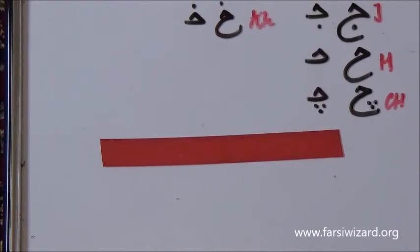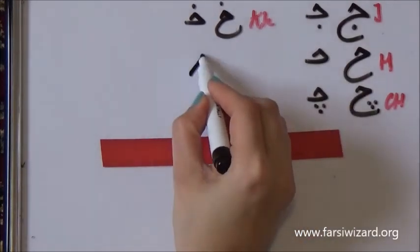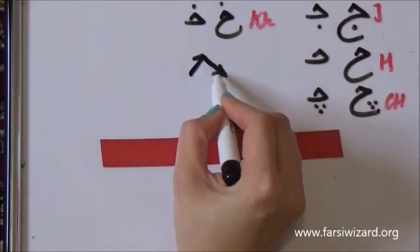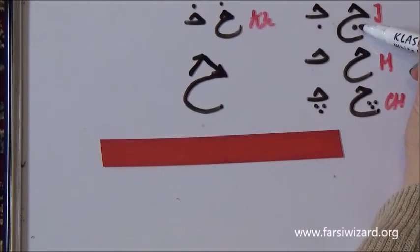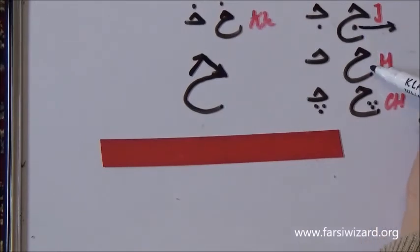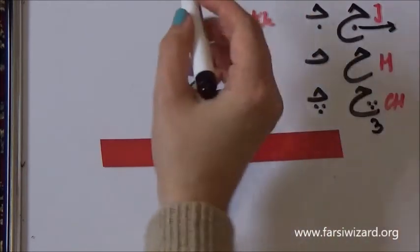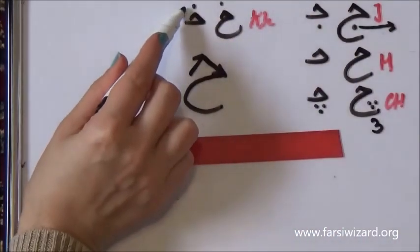Not difficult to write. Maybe a little bit tricky to remember the number and the place of dots, but you can get it with a little bit of practice. Remember how it is written. Three motions, one stroke. Jim has one dot inside the belly. HE has no dot. CHE has three dots inside the belly. And KHE has one dot above.